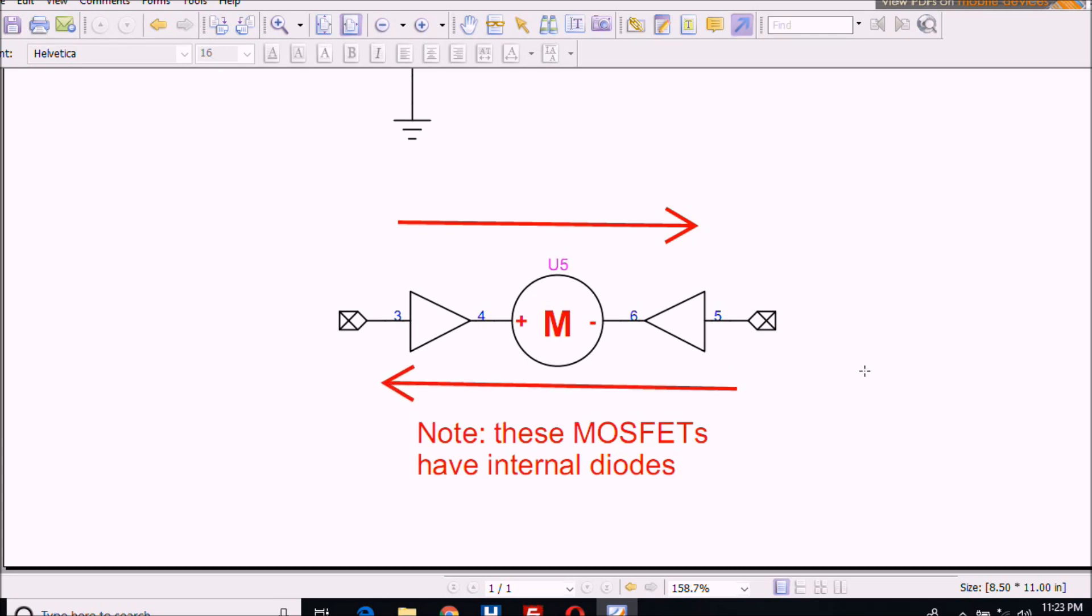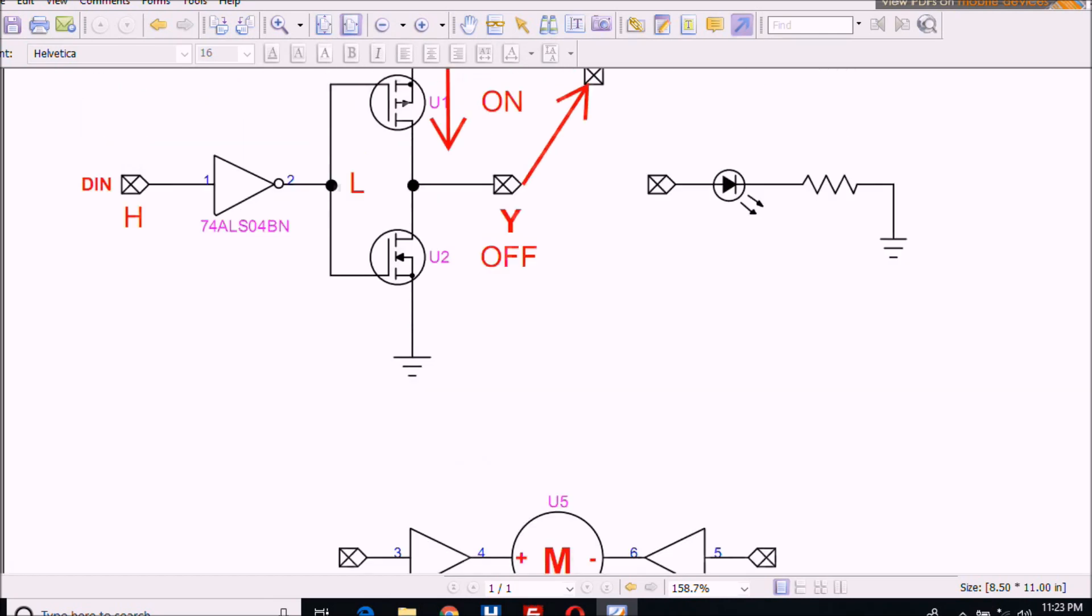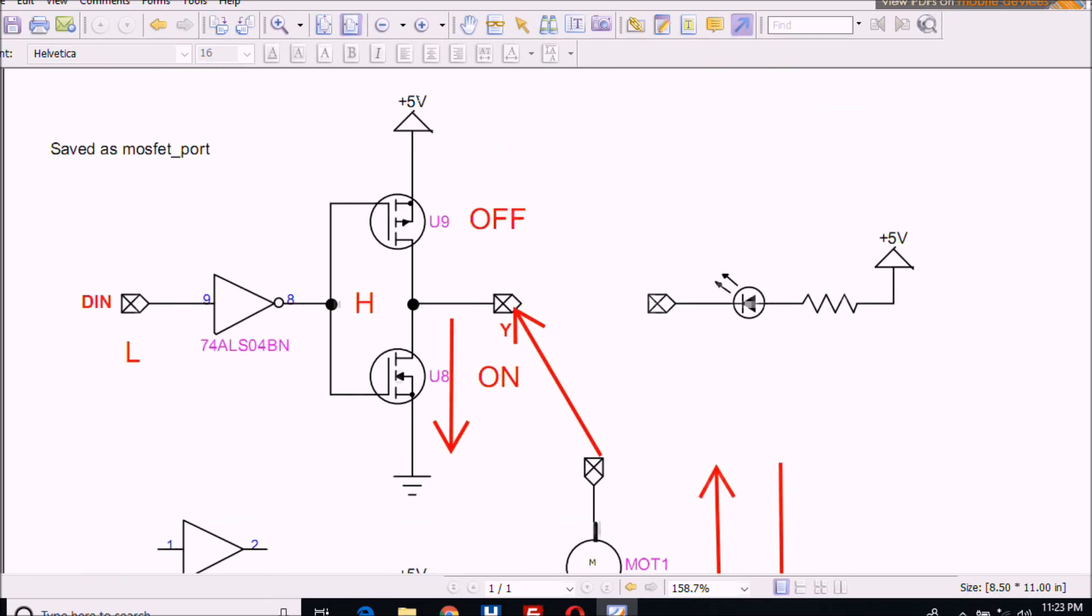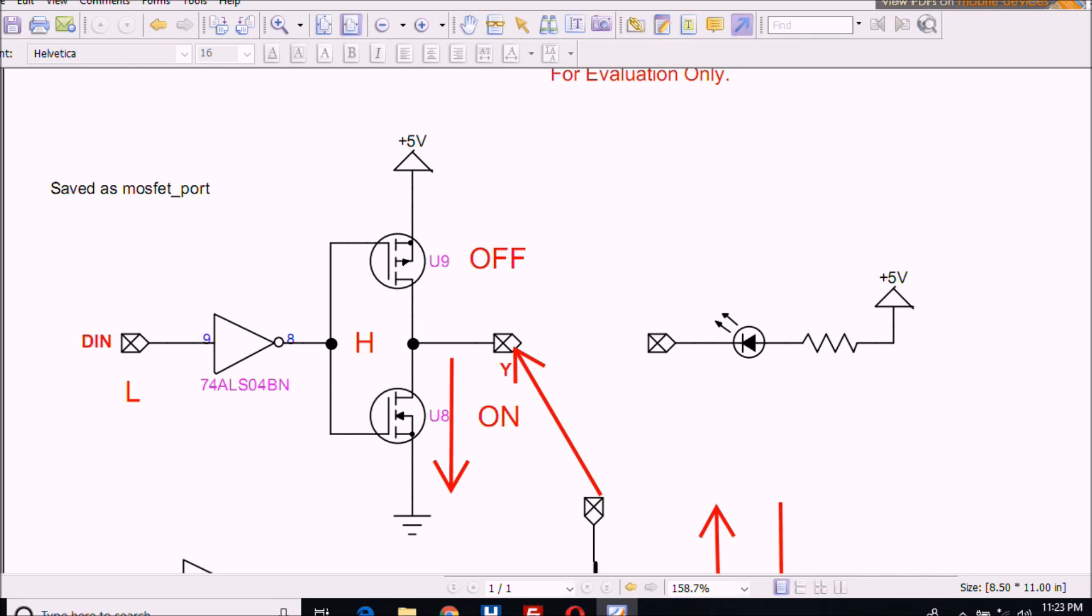It's a modification of an H-bridge circuit. High in, low out—motor runs in one direction. High out, low in—motor runs in the other direction. Note the MOSFETs I'm using have internal diodes. I came up with the idea to boost the power coming out of a microcontroller or similar device.